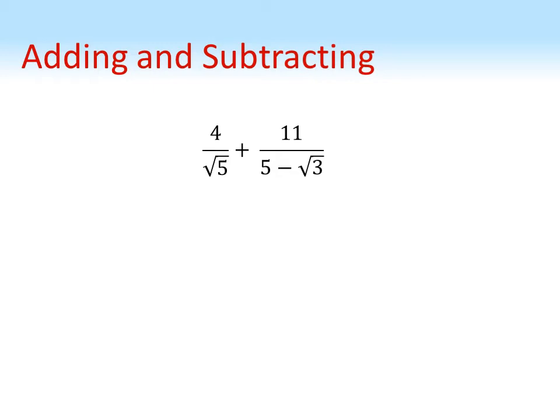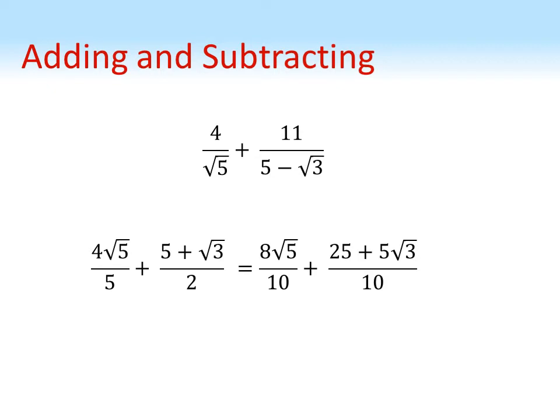But these two fractions can be written in a different form. If we rationalize the denominators, this sum is identical to 4 root 5 over 5 plus 5 plus root 3 over 2. We've got two fractions with rational denominators. We know how to deal with them—we can multiply them through to create the same denominator. The left-hand fraction we multiply top and bottom by 2, the right-hand one we multiply top and bottom by 5 to create fractions with the same denominator, which we can now add together. So having a rational denominator makes adding and subtracting a lot easier.